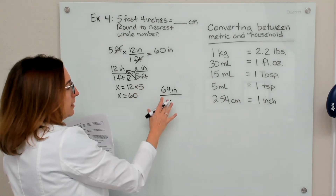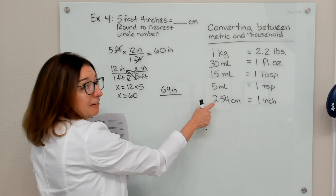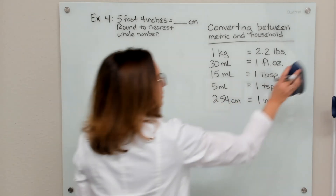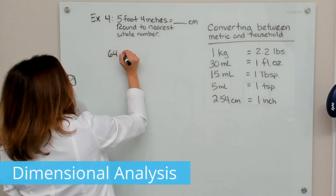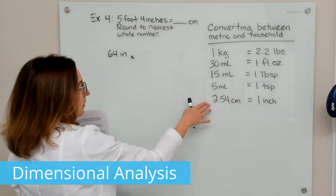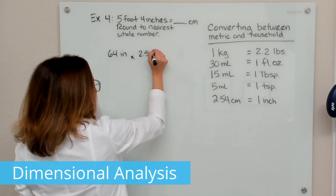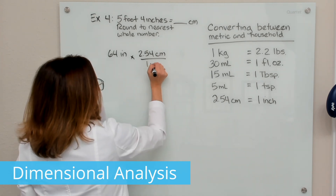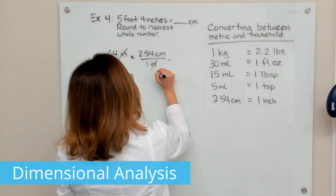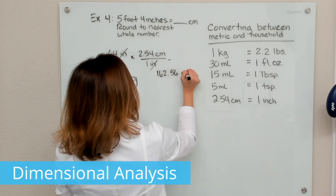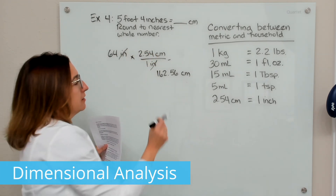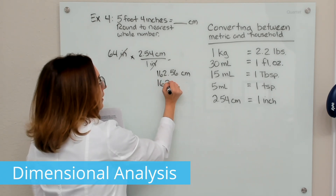Now we need to convert 64 inches into centimeters using the conversion factor 2.54 centimeters equals one inch. Using dimensional analysis, I write down 64 inches and multiply by the conversion factor, putting centimeters on top and inches on the bottom so that inches cross off. Multiplying this out gives 162.56 centimeters. Since our instructions say to round to the nearest whole number, we round up to 163 centimeters.